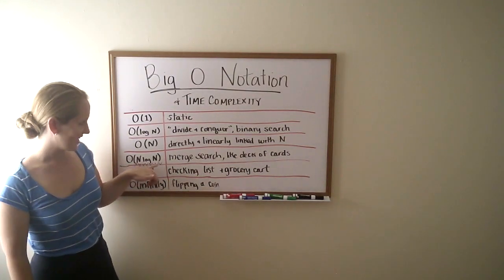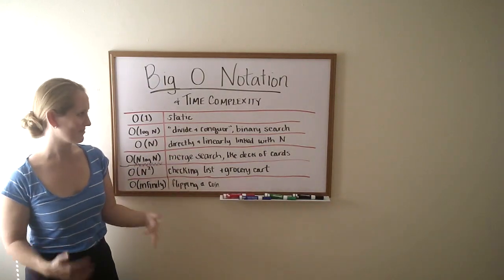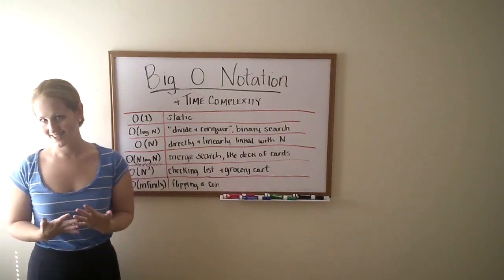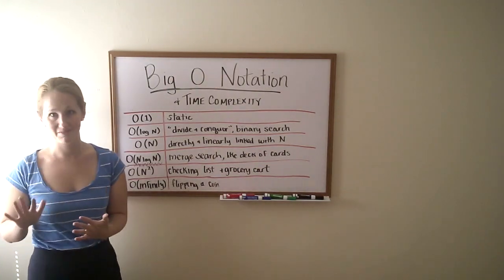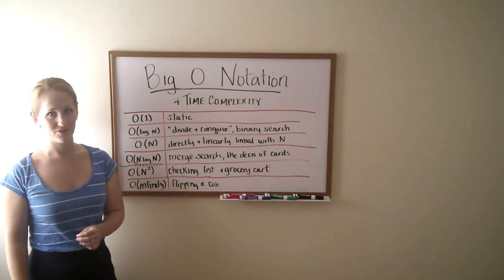Next, O n log n. That's a merge search. It's a little bit more complex than a binary search. So like searching through a deck of cards in a specific way. You don't have to understand it completely. Just know that there are different levels of complexity for Big O notation.